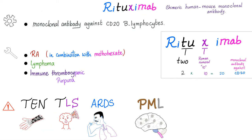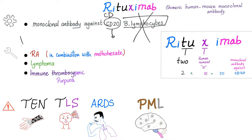Rituximab — it ends in -mab, so it's a monoclonal antibody against something. Remember the mnemonic: 2X means 2 times 10 equals 20, so it's a monoclonal antibody against CD20 on B lymphocytes. When you are anti-B lymphocyte: B lymphocytes become plasma cells and secrete auto-antibodies, driving autoimmune diseases like rheumatoid arthritis. When B lymphocytes proliferate uncontrollably and accumulate mutations, they cause lymphoma. They can also secrete auto-antibodies causing immune thrombocytopenia (ITP), so rituximab is used in ITP as well.